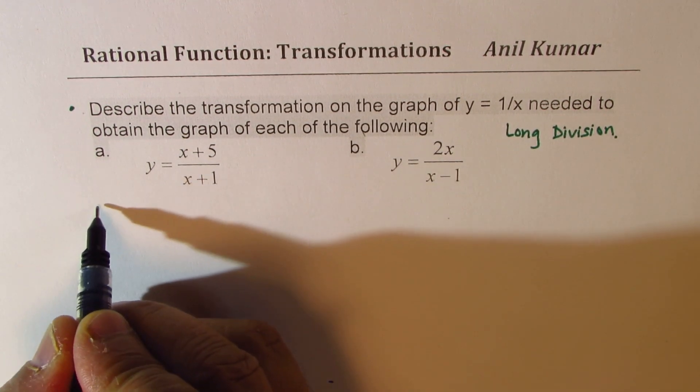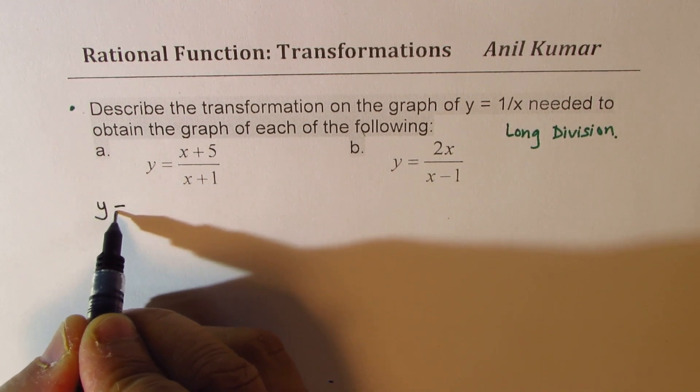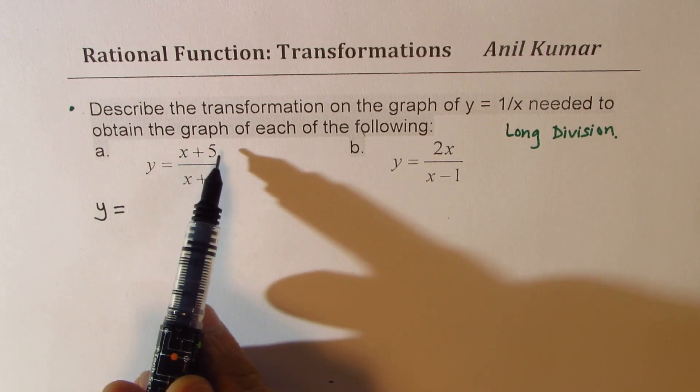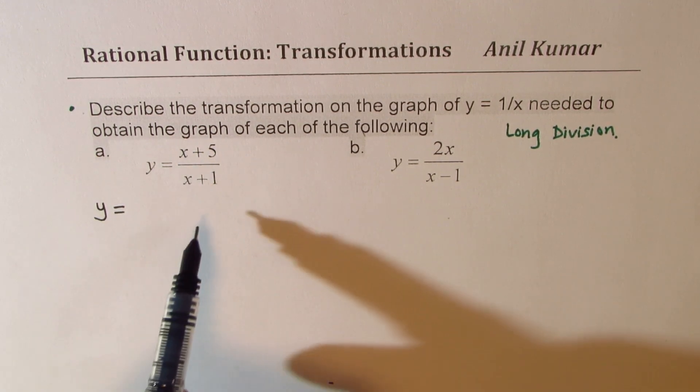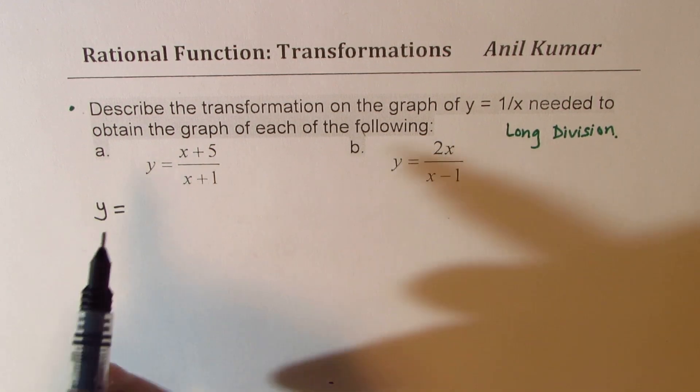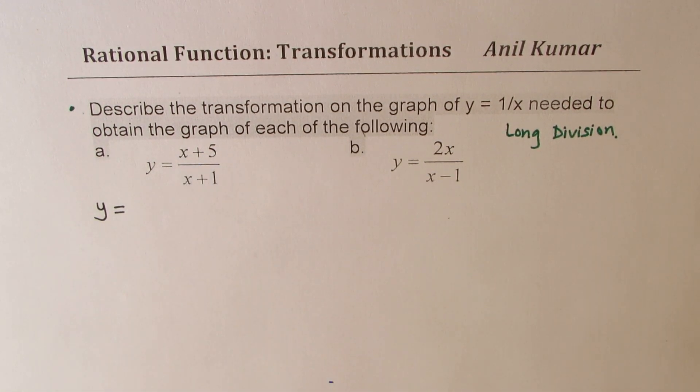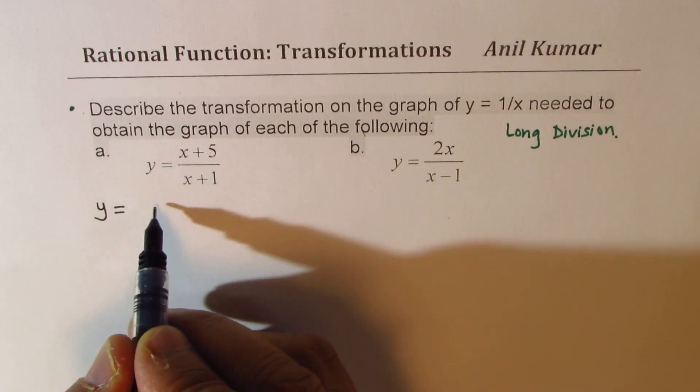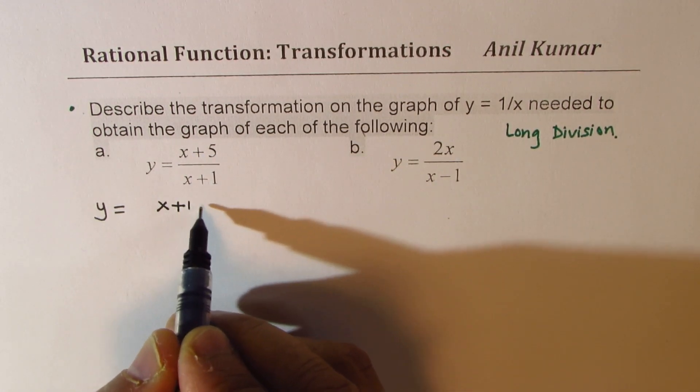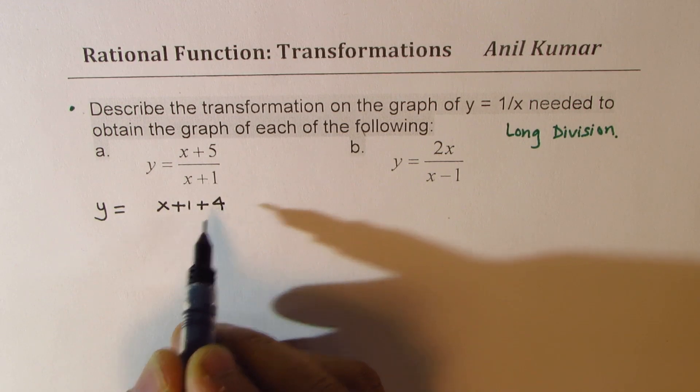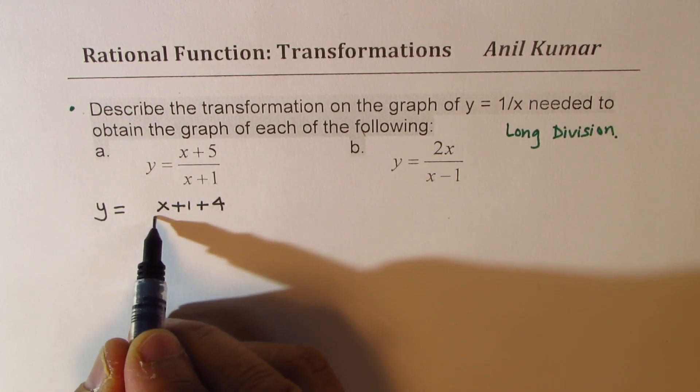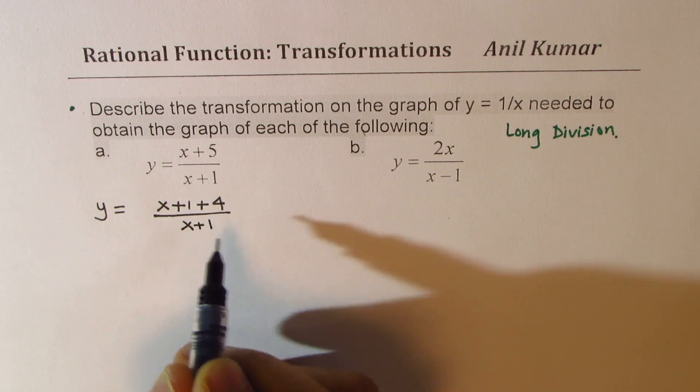So let us see how to do it. This is effectively a better method also. We have y equals x plus 5 over x plus 1. The idea is to split it so that we could have x plus 1 as a factor in numerator also. So x plus 5 could be written as x plus 1 plus 4 for example. That is x plus 5.